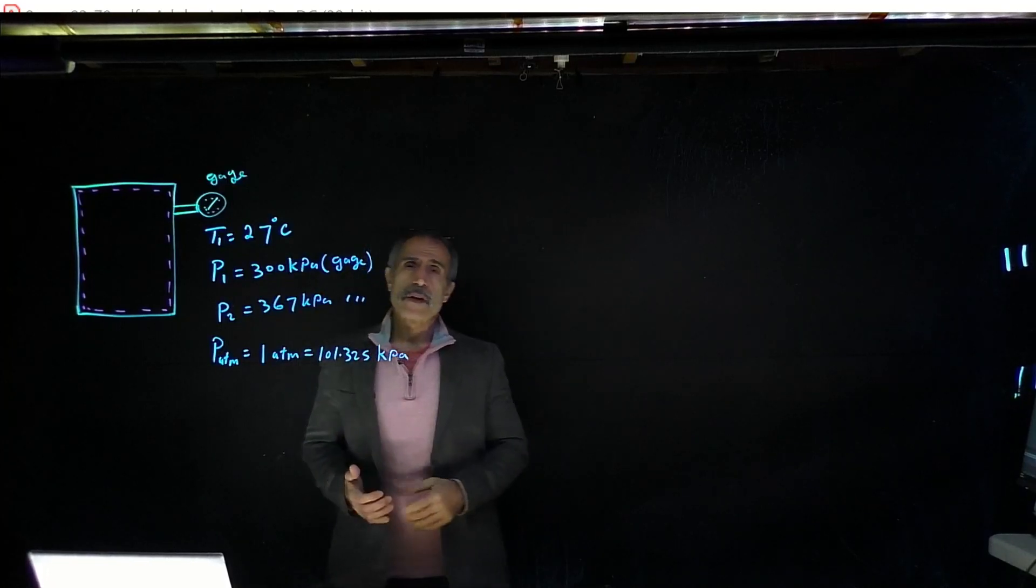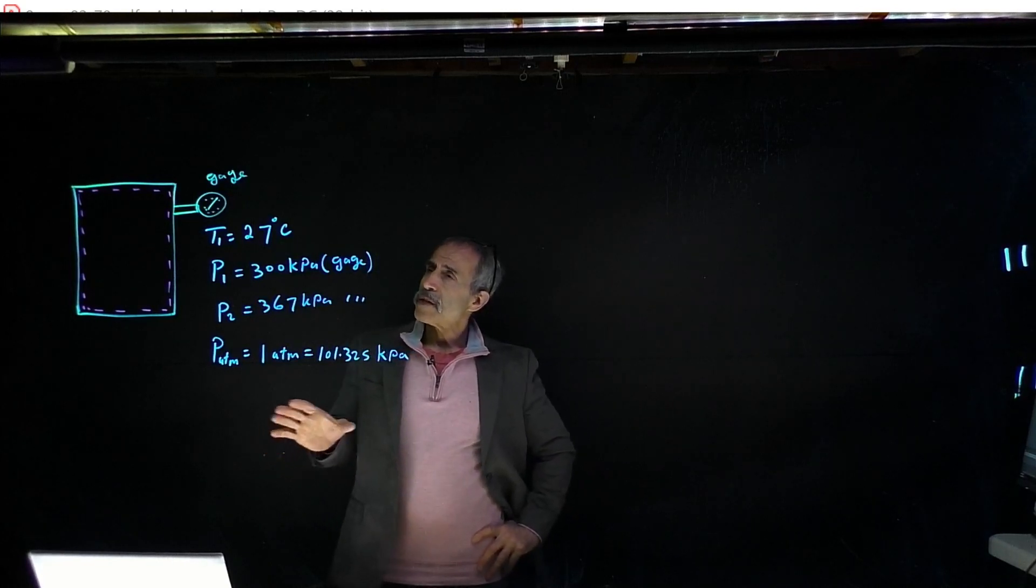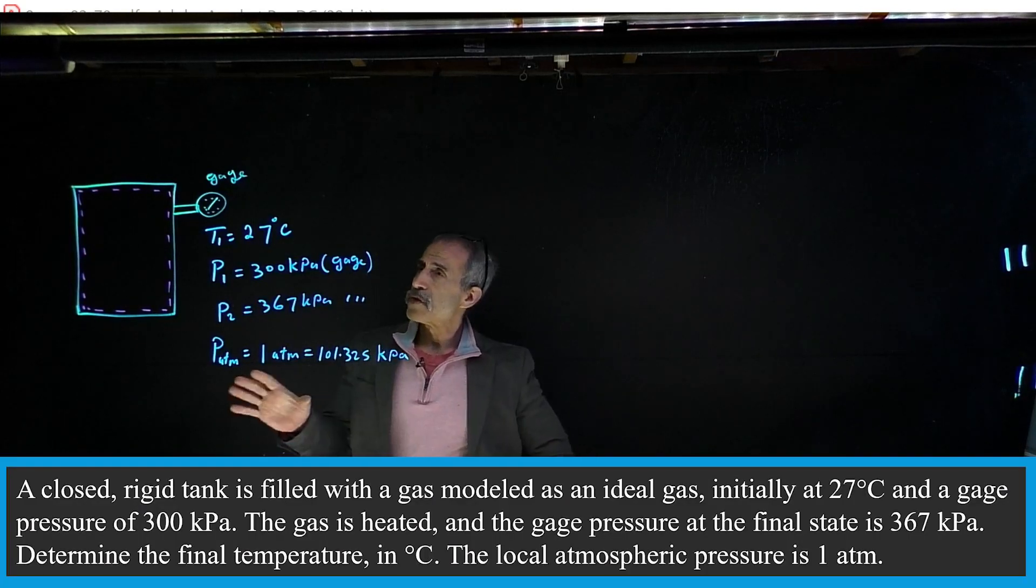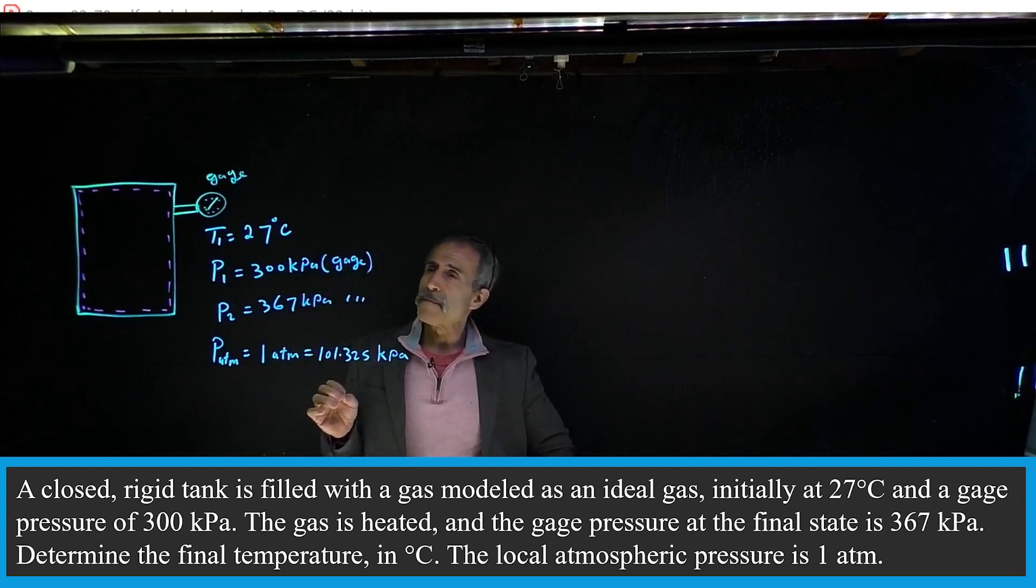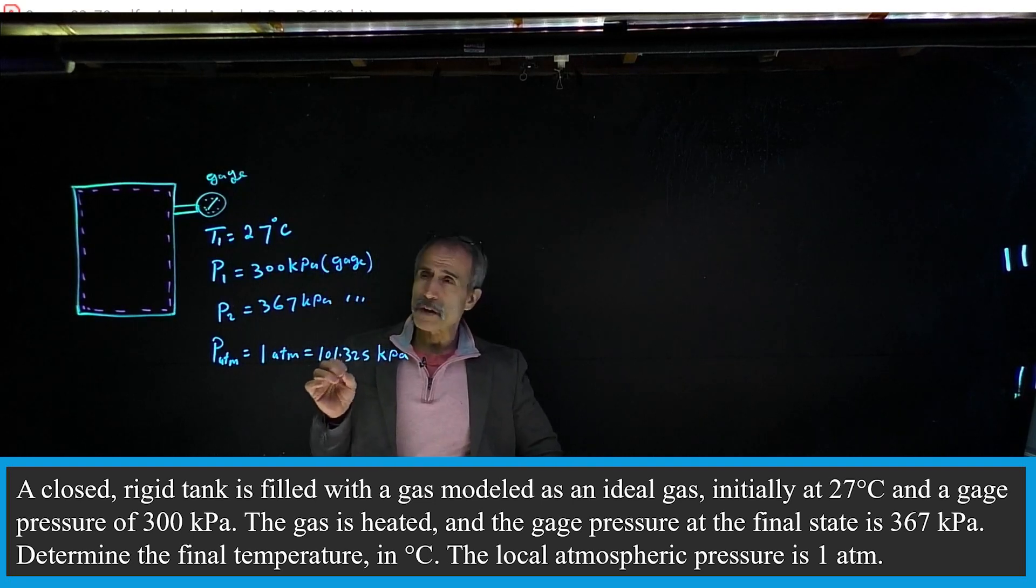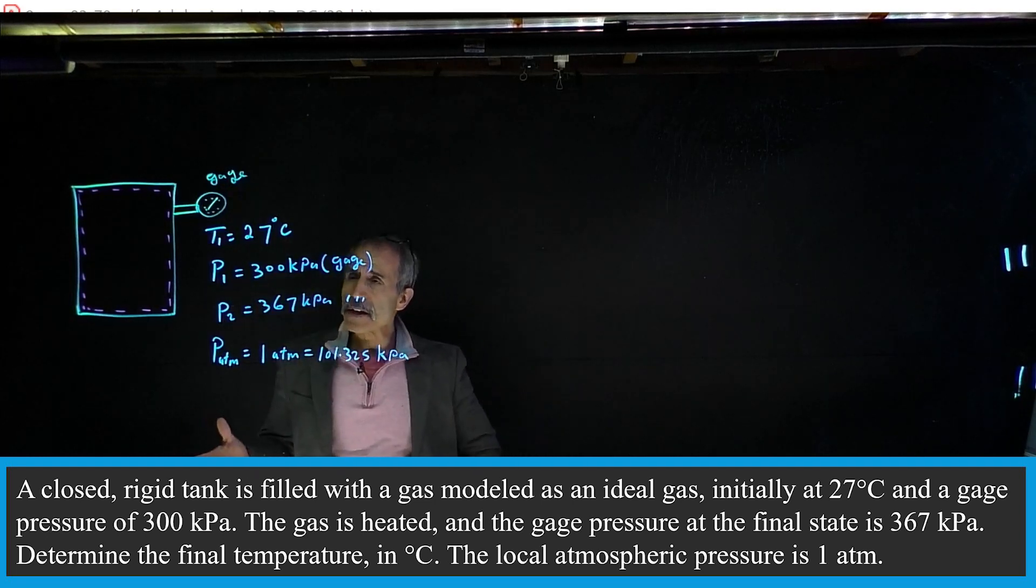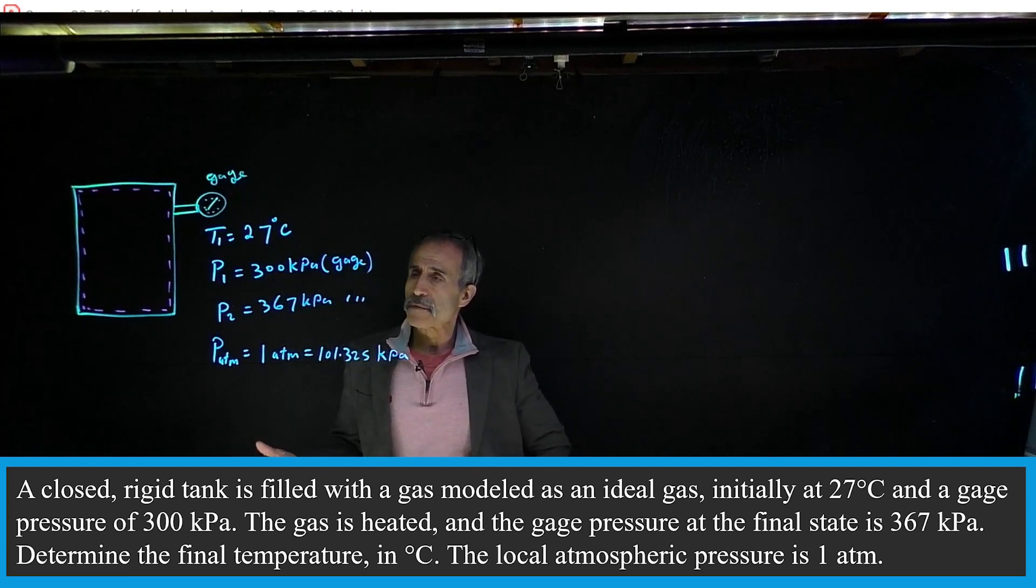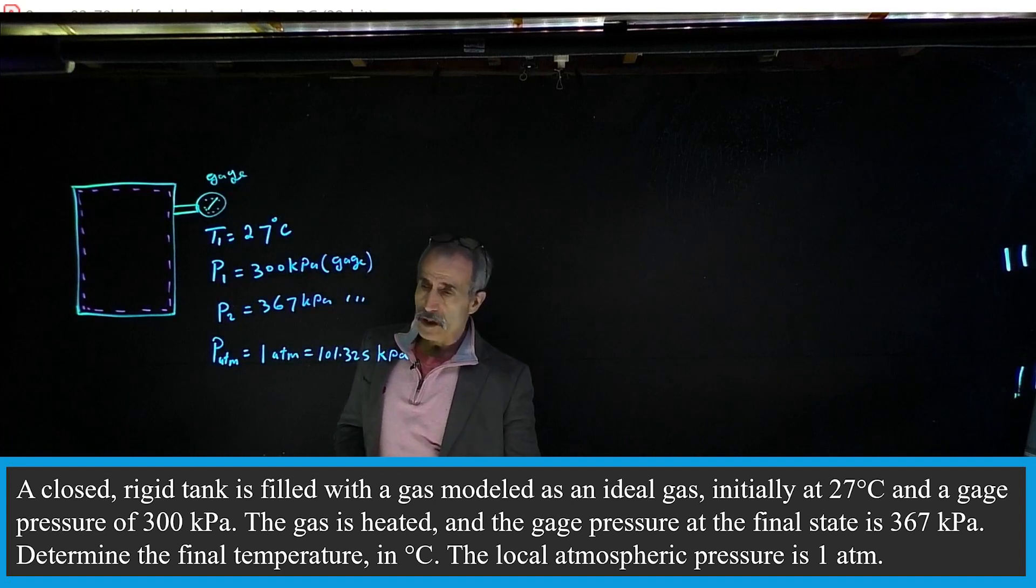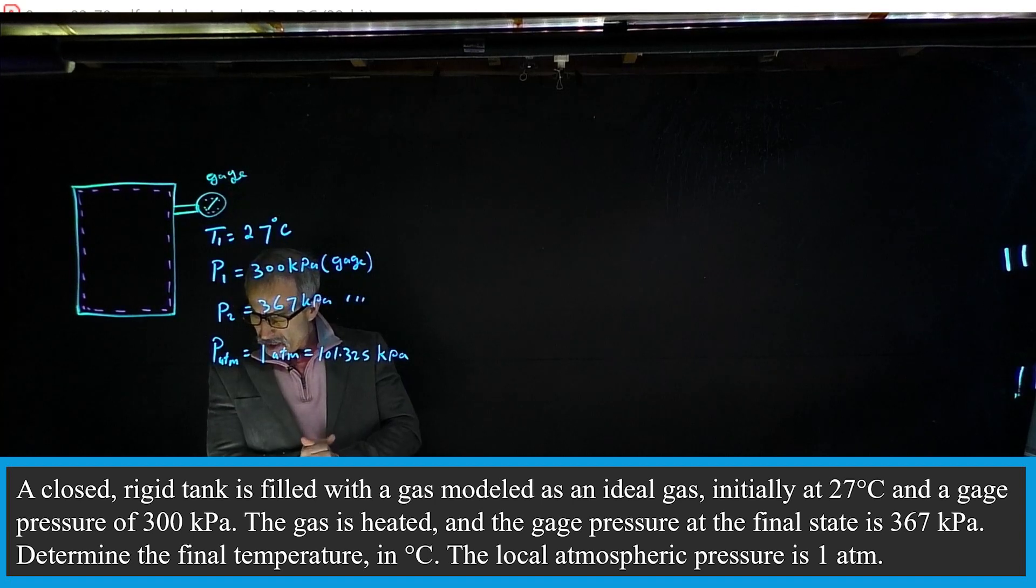Hello and welcome back for another lecture. In this lecture we're going to talk about the gas law. Take a look at this problem we have here with this rigid container. At the initial stage the temperature is 27 degrees Celsius and the pressure is the gauge pressure - be careful - it's a gauge pressure at 300 kilopascals. Then the system is heated and goes to stage 2 with the pressure becoming 367 kilopascals. The local atmospheric pressure is 1 atmosphere, and the question is asking what is the temperature in the final stage?